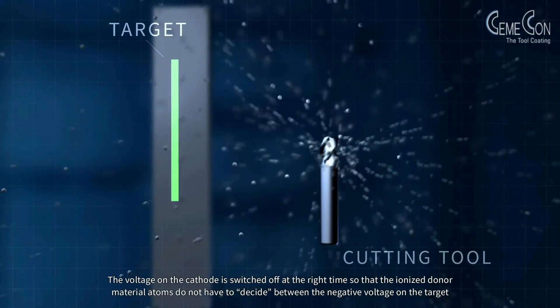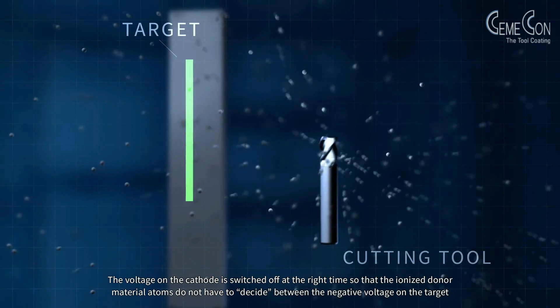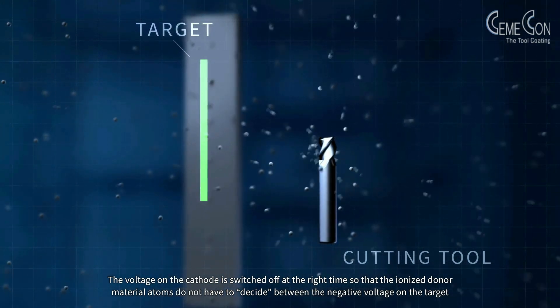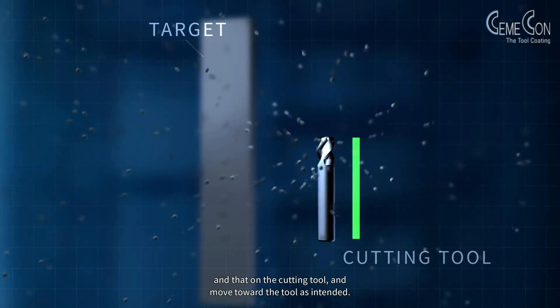Negative voltage is also deliberately applied to the cutting tool to be coated which attracts the ionized donor material atoms. The voltage on the cathode is switched off at the right time so that the ionized donor material atoms do not have to decide between the negative voltage on the target and that on the cutting tool and move toward the tool as intended.